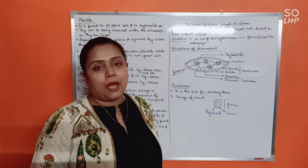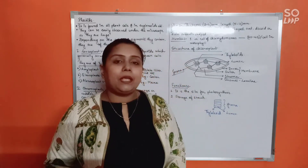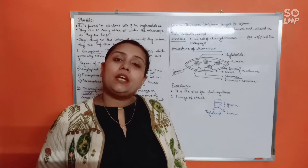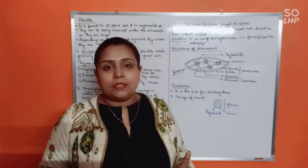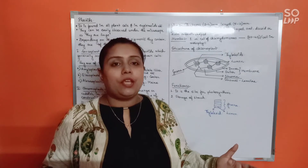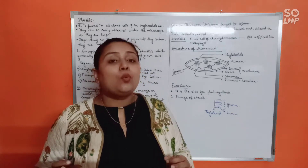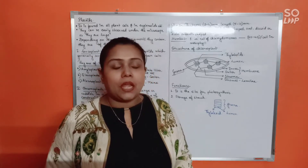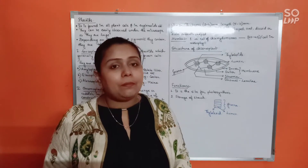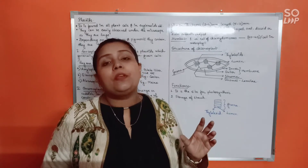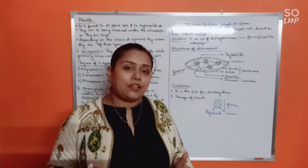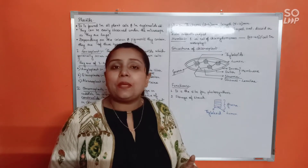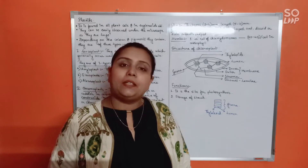Chloroplast is the site for photosynthesis. Photosynthesis, like aerobic respiration, is a complex process divided into two phases. The first is the light reaction, where sunlight is entrapped and converted to chemical energy in the form of ATP and NADPH. The second phase is the dark reaction, where using ATP and NADPH, sugar or food is produced by the plants.